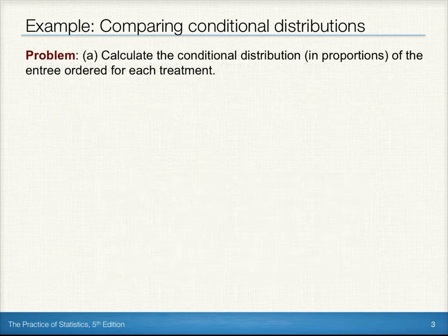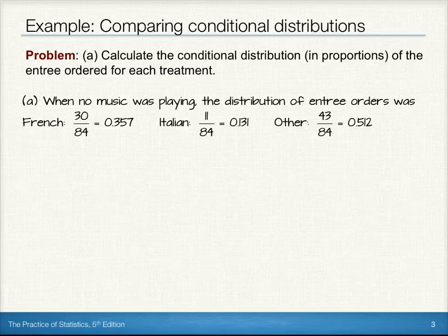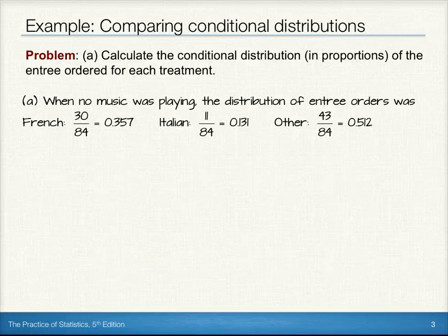The first part of this problem asks us to calculate the conditional distribution in proportions of the entree ordered for each treatment. When no music was playing there were 84 customers. The distribution of entree orders in proportions would be 30 out of 84 for French, or 35.7%. We have 13.1% ordering Italian and 51.2% ordering some other type of entree.